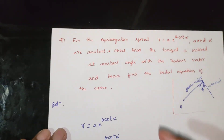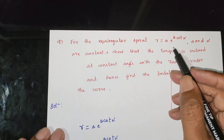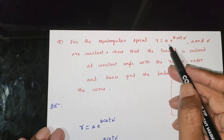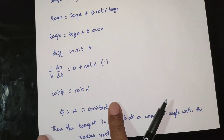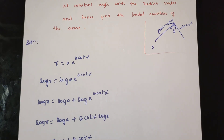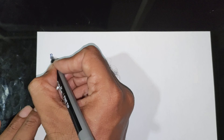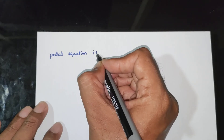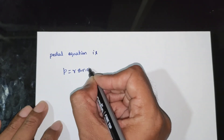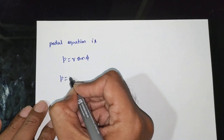The equiangular spiral r is equal to A into e power theta cot alpha, where A and alpha are constants, so that the tangent is inclined at a constant angle with the radius vector. Phi equals alpha, and alpha is constant — that is proved. Next, find the pedal equation of the curve. P is equal to r sin phi, therefore P is equal to r sin alpha.